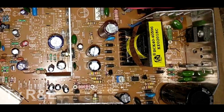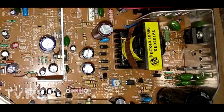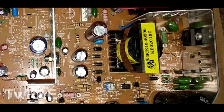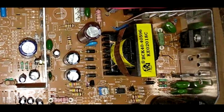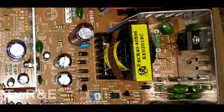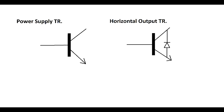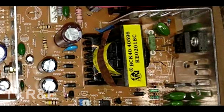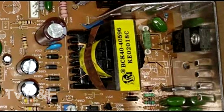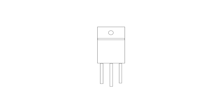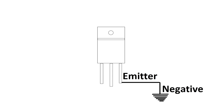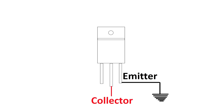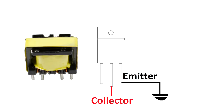Friends, this power supply has a switch drive transistor and a switching transistor. This is an NPN transistor — not a diode. This is a horizontal output transistor. The power supply transistor is a switcher transistor with 3 terminals. One terminal is at ground, and positive 300 volts is input at this transistor's collector point.